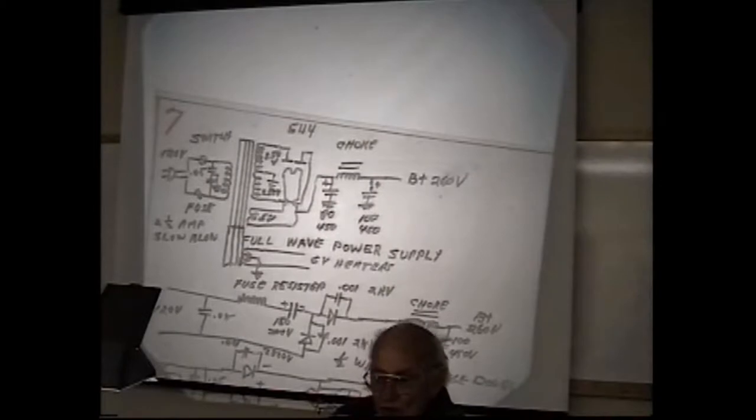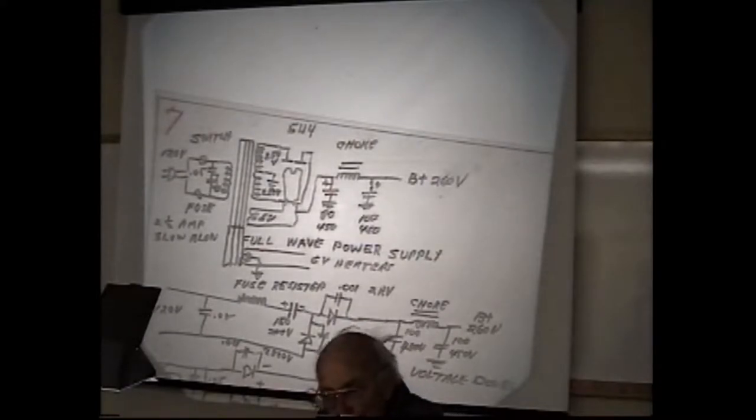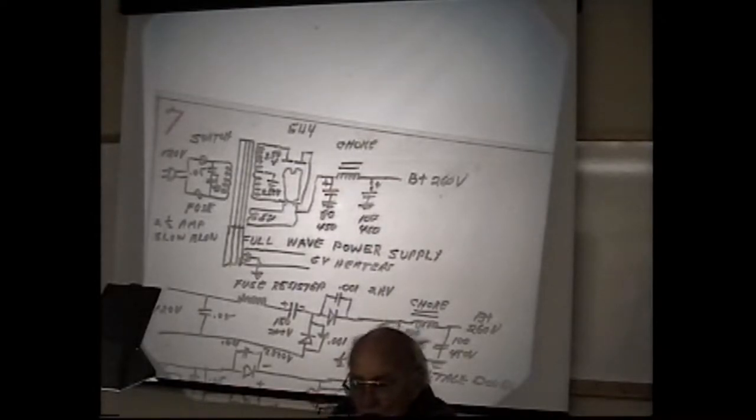Of course, if the picture is rolling, you know there's something wrong with the vertical. If it's in slanted lines, there's something wrong with the horizontal. If there's a hum in it in the speaker, there could be a bad audio output tube or there could be a bad filter capacitor in the power supply.